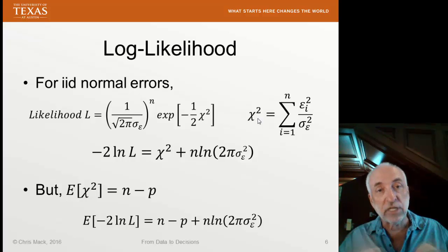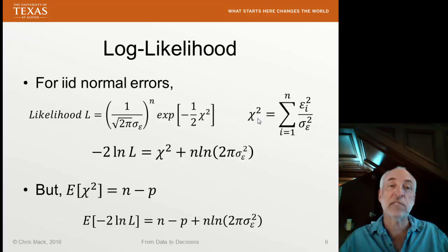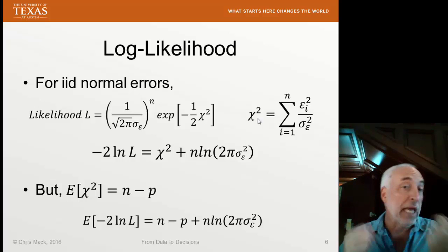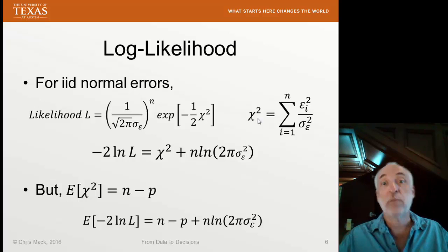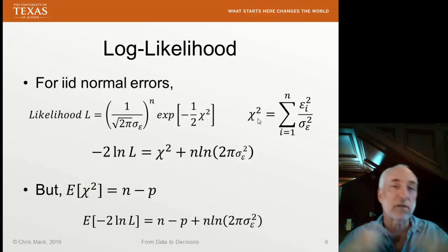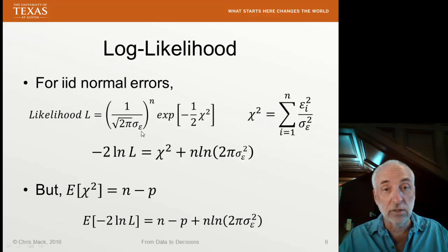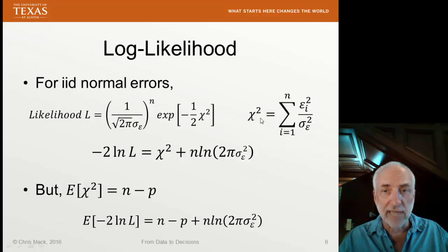Let me give you two examples. But first, let's look at this likelihood again for the case of IID normal errors. Ordinary least squares regression assumes that all of the errors are independent and identically distributed and that they all have a normal distribution. Because they're independent, I can multiply all the probabilities together. Every probability is a Gaussian. So they all have the same sigma epsilon, error distribution standard deviation. And therefore, when I multiply all the probabilities together, I get this expression where chi-square as we've seen it so many times before.